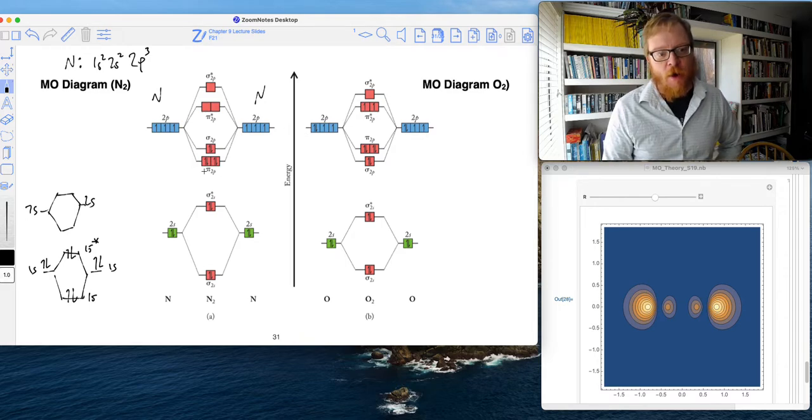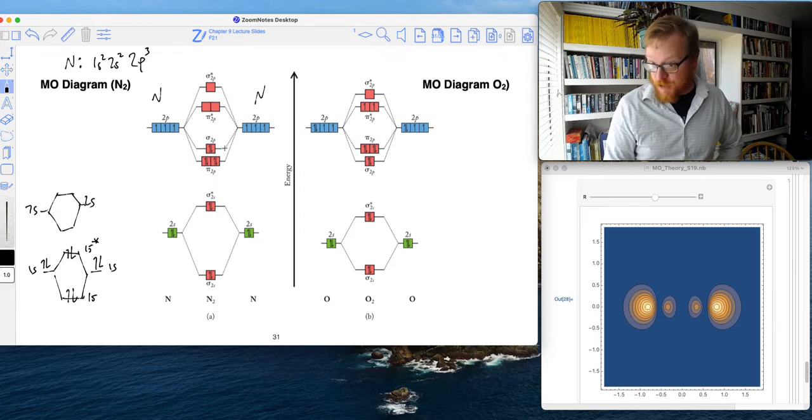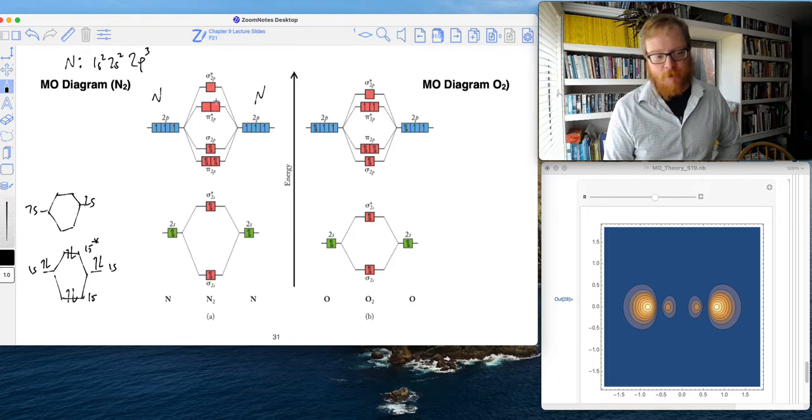And those molecular orbitals are the pi 2P, the sigma 2P, the pi star 2P—that's our antibond—and the sigma star 2P.